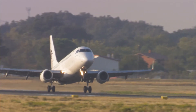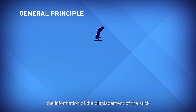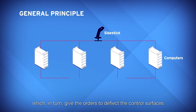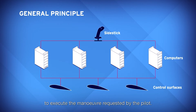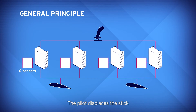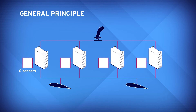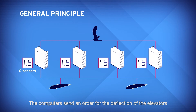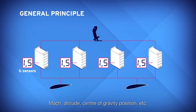On fly-by-wire systems, the information of the displacement of the stick or of the control wheel is sent to the computers, which in turn give the orders to deflect the control surfaces to execute the maneuver requested by the pilot. For example, the pilot displaces the stick to obtain a load factor of 1.5G. This command is transmitted to the computers, and the computers send an order for the deflection of the elevators to reach 1.5G. This order is a function of speed, Mach, altitude, center of gravity position, etc.